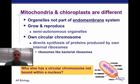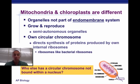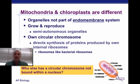How are mitochondria and chloroplasts different from other organelles in the cell? They're different because they're not a part of the endomembrane system — which includes the vacuoles, the ER, the Golgi apparatus, the lysosome, et cetera. They grow and reproduce on their own. They're semi-autonomous; they can do it simply by themselves. They have their own circular chromosomes, their own circular DNA, which is very similar to bacteria. So when I pose the question: who else has a circular chromosome not bound by a nucleus? You automatically have to think about bacteria.